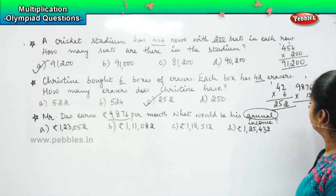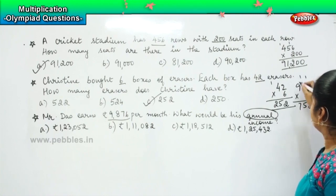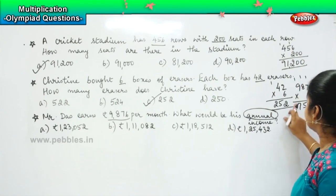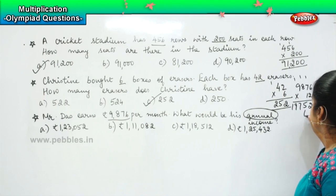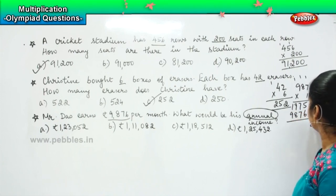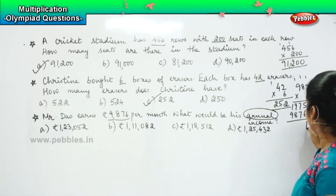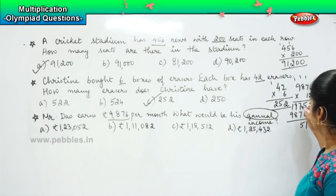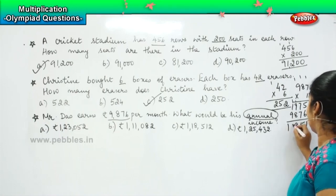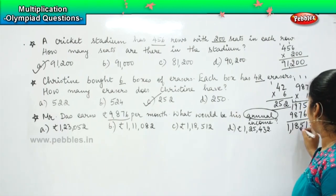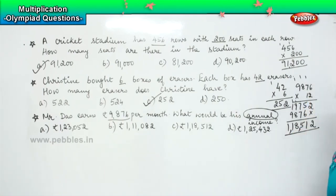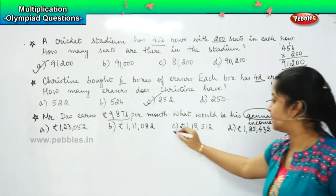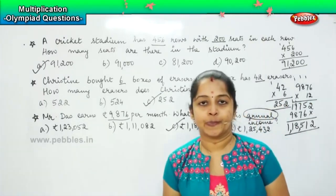So 6 twos are 12, carry 1. 7 twos are 14 plus 1 is 15, carry 1. 8 twos are 16 plus 1 is 17, carry 1. 9 twos are 18 plus 1 is 19. 6 ones are 6. 7 ones are 7. 8 ones are 8. 9 ones are 9. So, 2. 5 plus 6 is 11. 1 plus 7 is 8. 8 plus 7 is 15. 1 plus 9 is 10. 10 plus 8 is 18. 1 plus 1 is 2. 2 plus 9 is 11. So it will be 1 lakh 18,512. Where can you see it, children? It is option C. Clear? Shall we move to the next one?